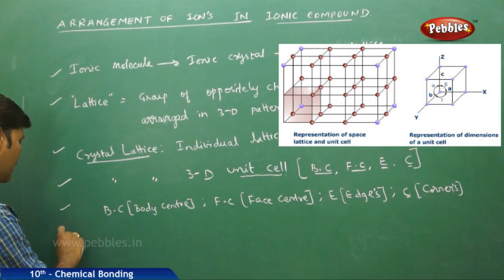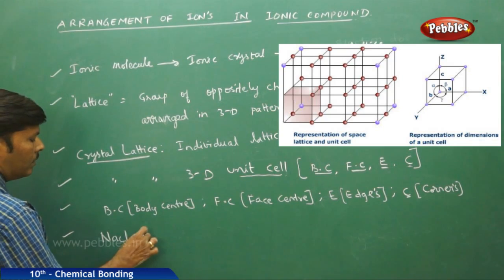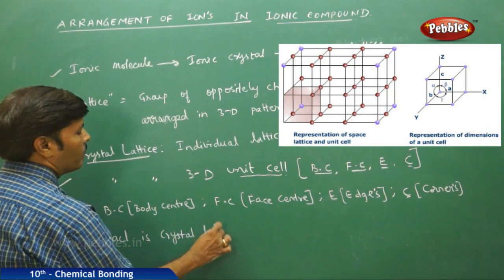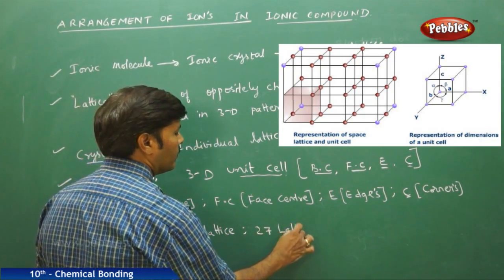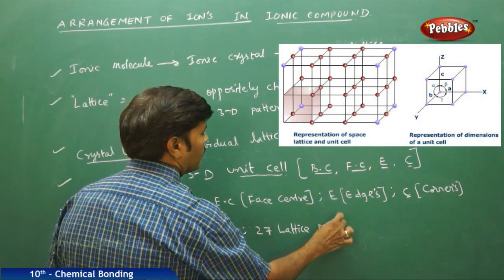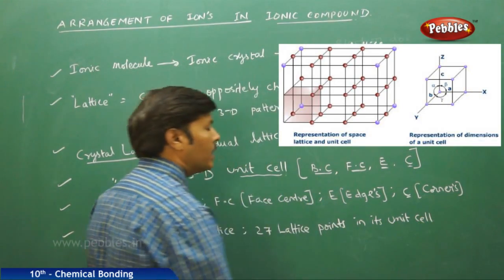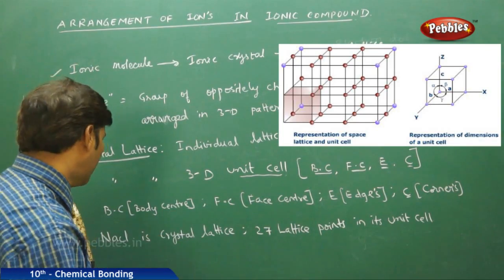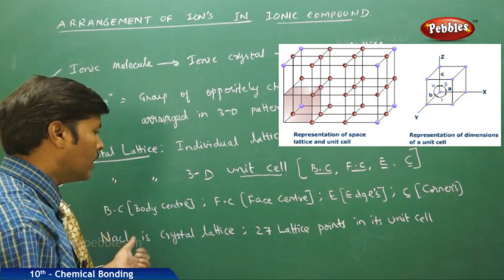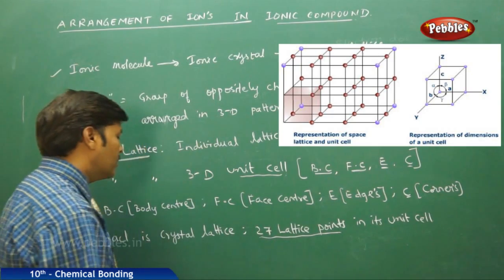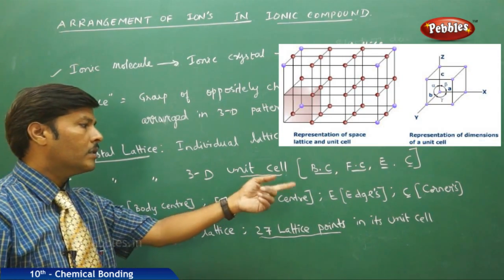Based on this, we can take one example for the crystal lattice. If you take sodium chloride, NaCl is a crystal lattice with 27 lattice points in its unit cell. A unit cell is the smallest portion of the crystal lattice that has all the entire properties of the crystal. These 27 lattice points cover all four types: body center, face center, edges, and corners.